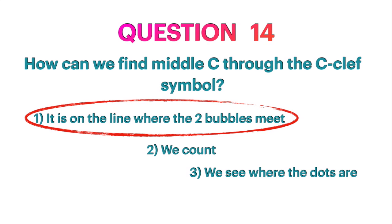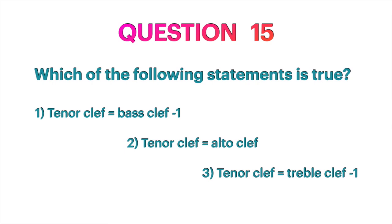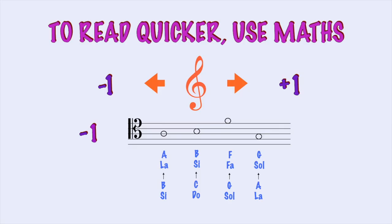Question 15: Which of the following statements is true? Tenor clef equals treble clef minus one. Let's compare with maths again: every time we take one note out — Si becomes La, Do becomes Si, Sol equals Fa, and A equals G.